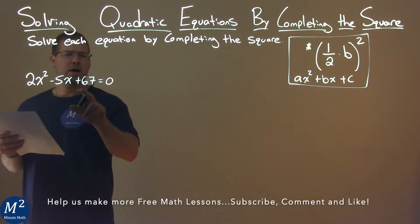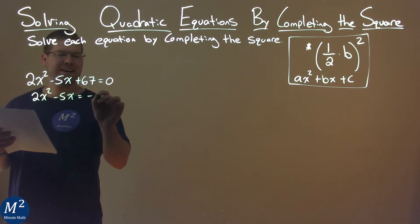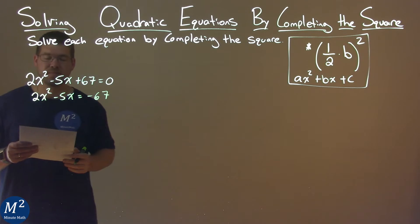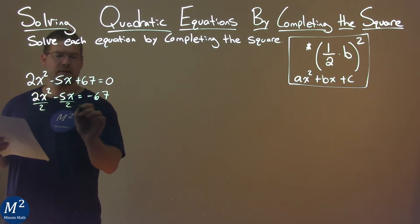The first thing I'm going to do is subtract 67 from both sides, so I have 2x squared minus 5x equals negative 67. Now my coefficient up front, a, is 2, so I'm going to divide all parts by 2.